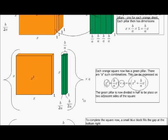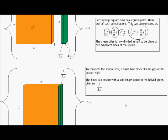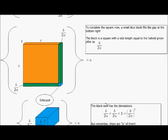Now, what we do is divide the green pillar in half, so that each half can be placed on two adjacent sides. And that's what we get. Remember, the green pillar had a width of b over a. Now that width has been halved again, so it's now b over 2a. That's this width here, b over 2a.